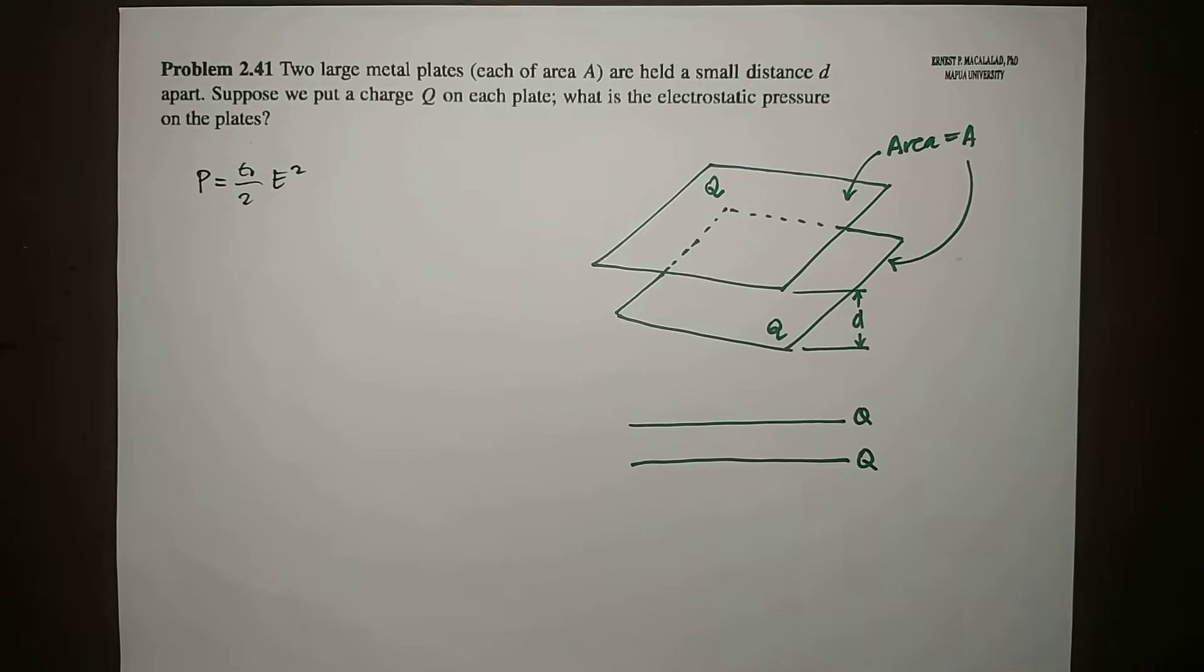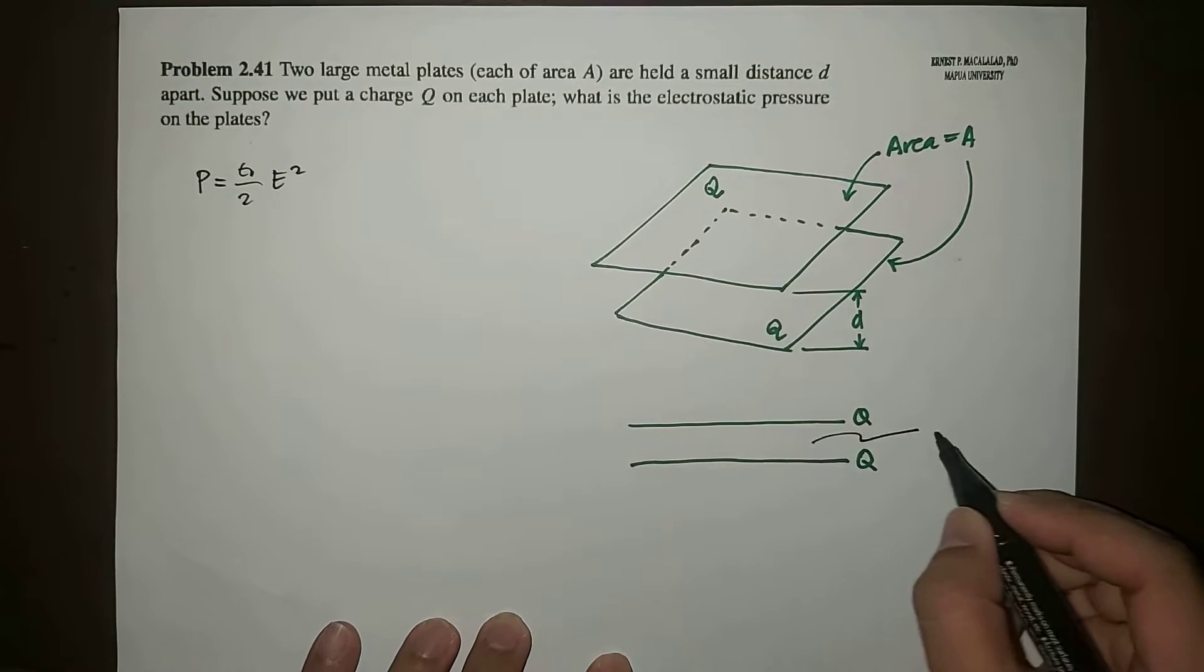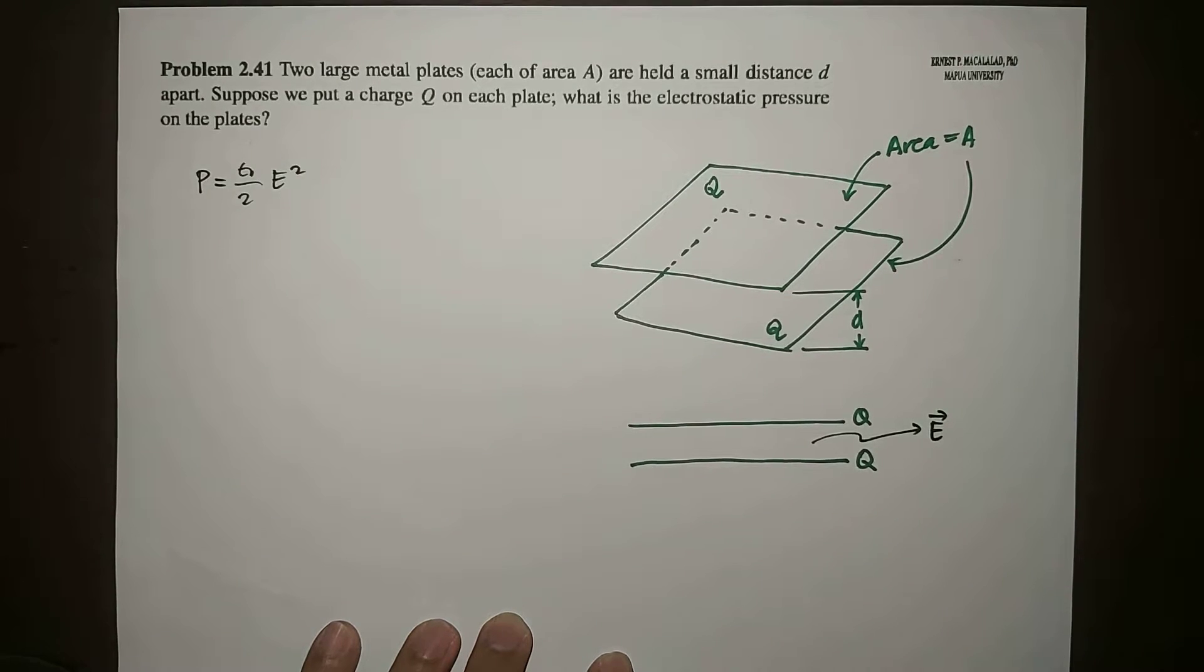Because of equal charges on the plates, the electric field between the plates is zero. You can calculate that using Gauss's law. So that means the electric field that we're going to calculate will be outside of the plates, above and below.